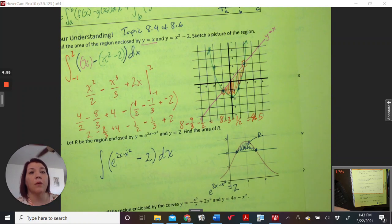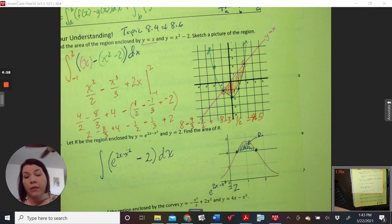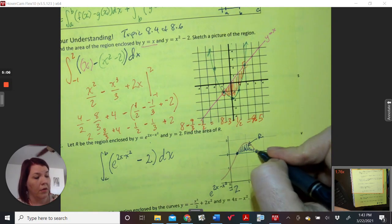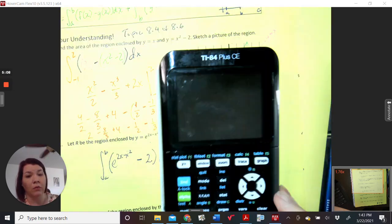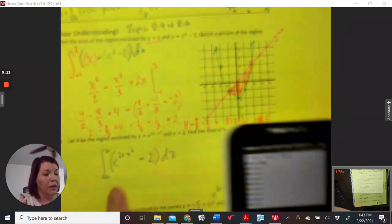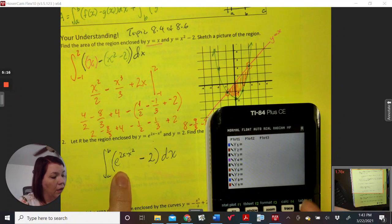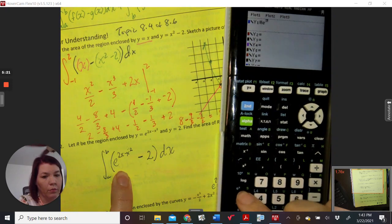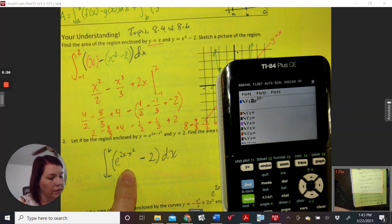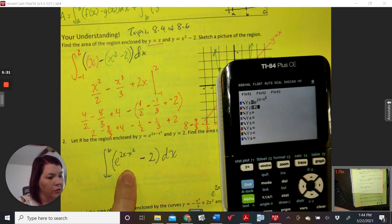So how do I find those? I'm going to let my calculator find those. I'm going to have a and b. I'm going to let my calculator figure out what a and b are. So there's a couple of really cool things my calculator can do here. First thing I'm going to do is go back here and type in my equation for y1. e, so that's second ln to bring up e, 2x minus x squared. And then I'm just going to let this be 2.